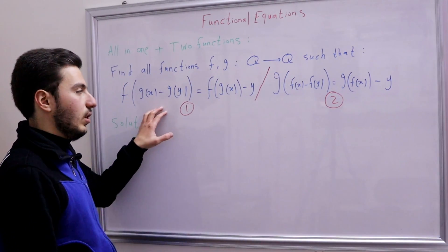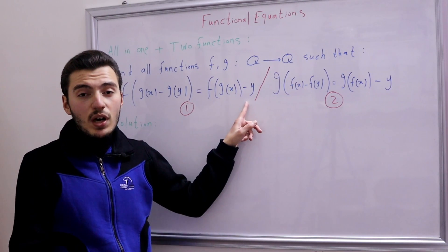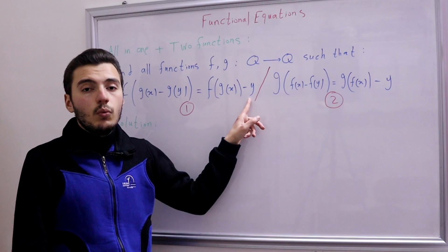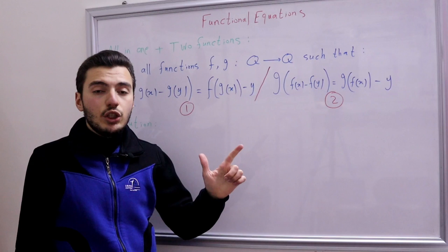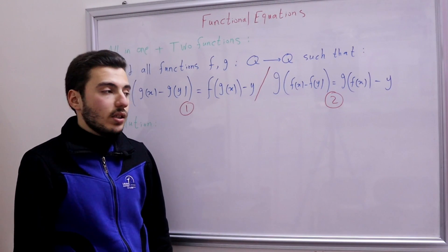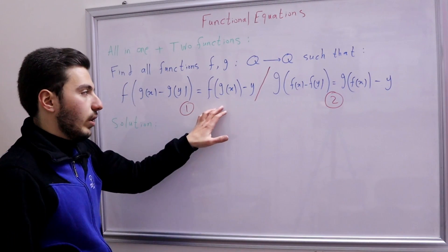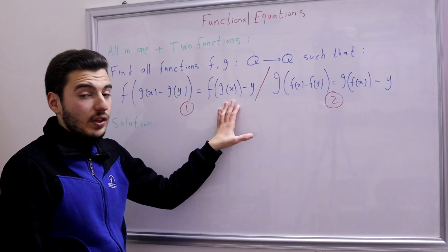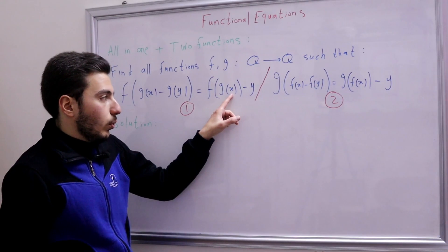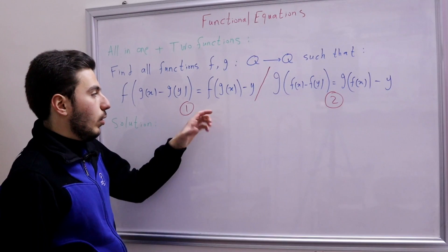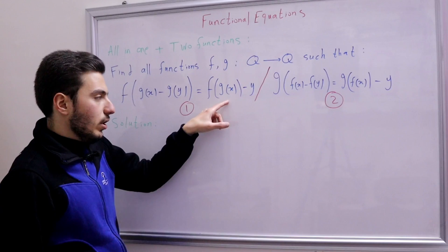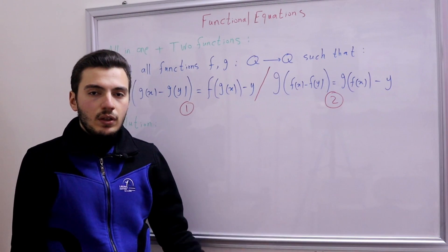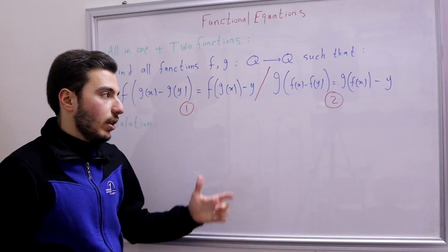There's a free y in the equation, which is really powerful. When we see a free variable, we should immediately try to show that our function is surjective and injective. Let's try to show f is surjective. We substitute P(0, y): on the left-hand side we get f of something (a constant), and on the right-hand side we get that constant minus y, which is a surjective quantity. So f is surjective, and by symmetry g is surjective as well.